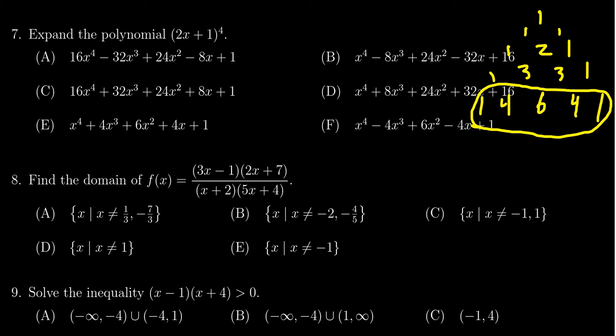So as we multiply this out, we're going to have 2x to the 4th times 1. So you get 1 times 2 to the 4th times x to the 4th. The next one here, you're going to get 4 times 2 cubed x cubed.